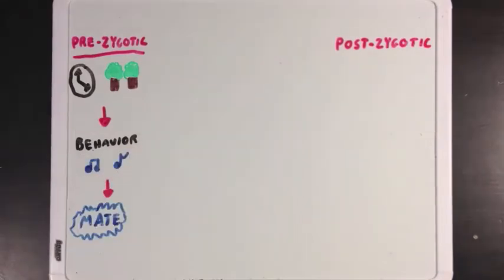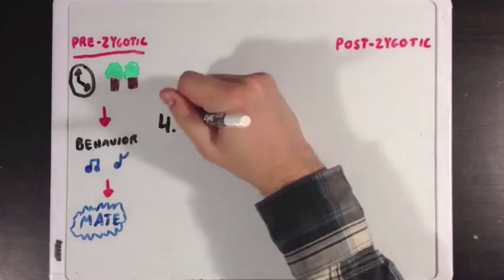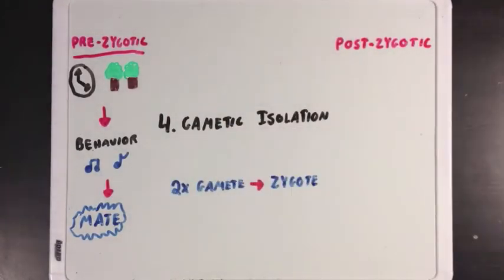If two organisms do mate successfully, they may still encounter gametic isolation, which is when fertilization between the two gametes to form a zygote is impossible.